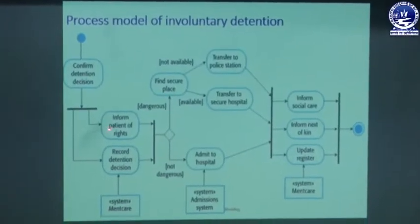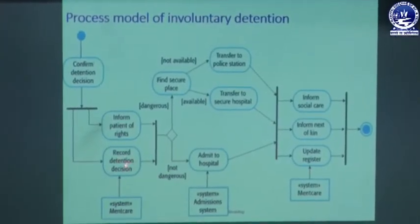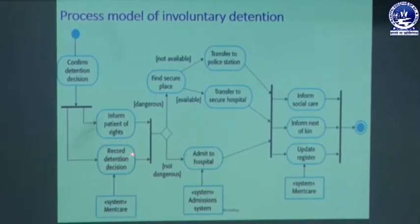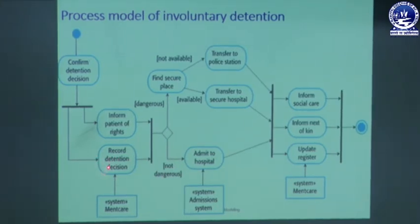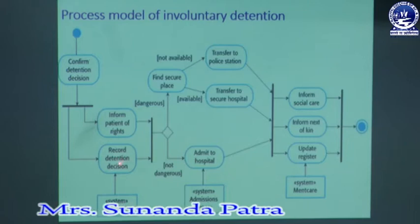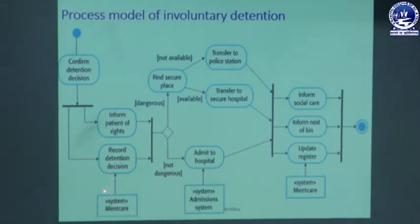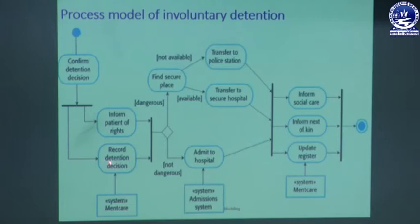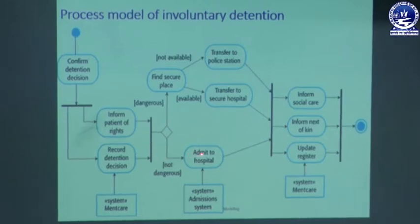After informing the patient of their rights, we have to record the detention decision — when to admit, when to discharge, and what major drugs can be given to the patient. These things are recorded and kept in the mental health care system. After maintaining the detention decision in the system, we go to the next decision: is the patient dangerous or not dangerous? If the patient is not dangerous, we admit them into the hospital.